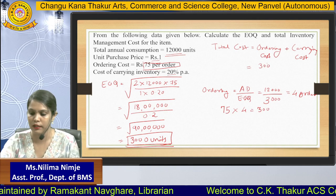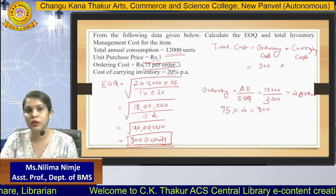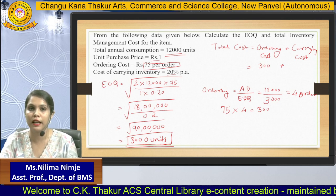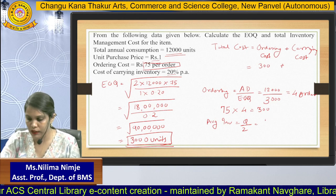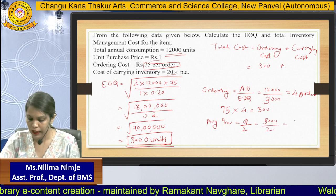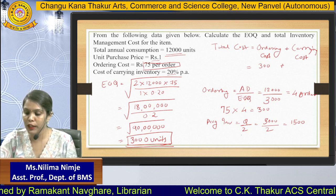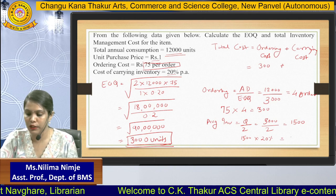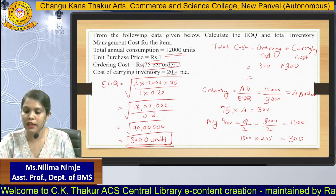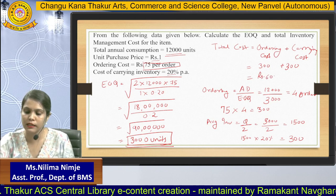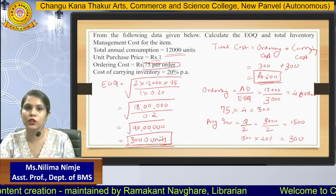For carrying cost, we use average inventory = Q/2 = 3,000/2 = 1,500 units. Carrying cost = 1,500 × 20% = ₹300. Therefore, total inventory management cost = ordering cost + carrying cost = ₹300 + ₹300 = ₹600. EOQ is 3,000 units and total cost is ₹600.